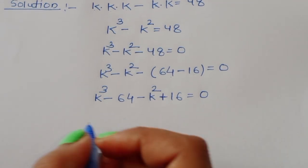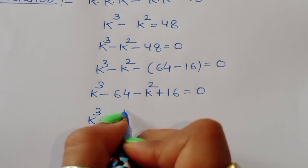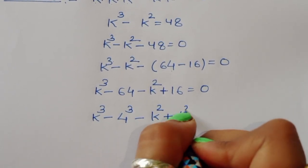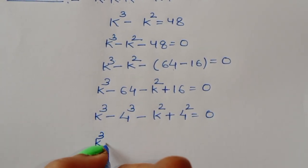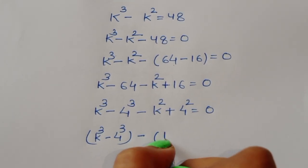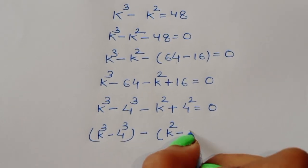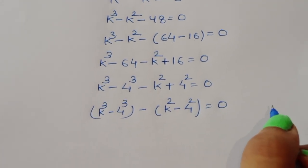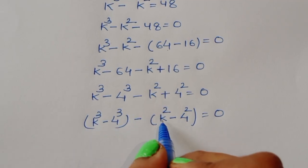Now we rewrite: k cubed minus 64 becomes k cubed minus 4 cubed, and k squared minus 16 becomes k squared minus 4 squared. So we group them in brackets: (k cubed minus 4 cubed) minus (k squared minus 4 squared) equals 0. We now have two recognizable algebraic forms.